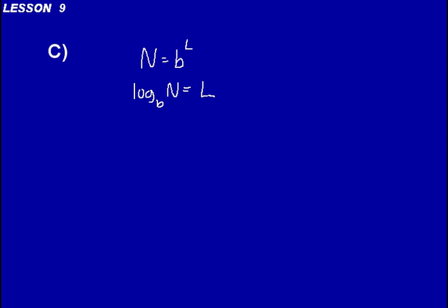Instead of writing the whole number out all the time, you would just write out the exponent of it. Today, the main logarithms we use are ones with a base of e or a base of 10 — that's what part D of this lesson is about. Think about if you had 100. You could write that with a base of 10 to the power of 2, because 100 equals 10 squared. Likewise, log base 10 of 100 equals 2.